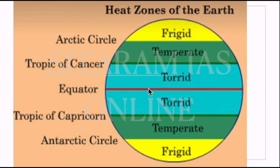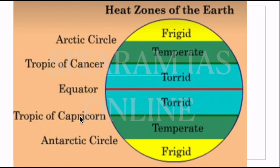The torrid zone is where the areas where the sun falls directly overhead at least once in a year. In the temperate zone, the sun never falls overhead. And in the frigid zone, there is a continuous day for six months and continuous night for six months, because it is 66 and a half degrees inclined with the orbit of the earth. The torrid zone lies between Tropic of Cancer and Tropic of Capricorn. Temperate zone lies between Tropic of Cancer and Arctic Circle, and Tropic of Capricorn and Antarctic Circle. Frigid zone lies between Arctic Circle and North Pole, and Antarctic Circle and South Pole.